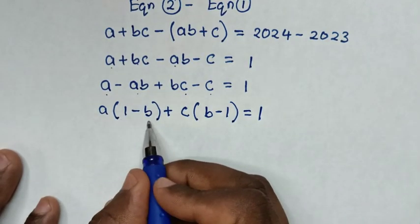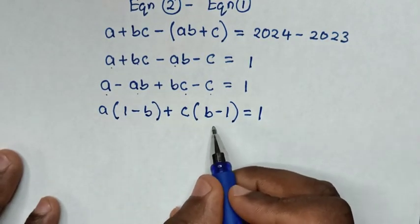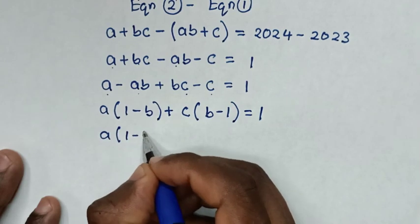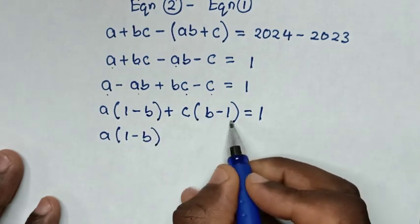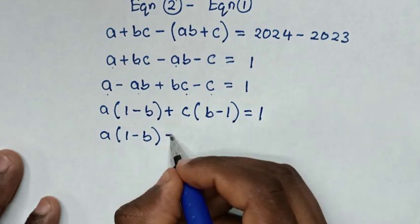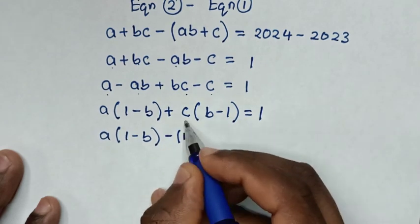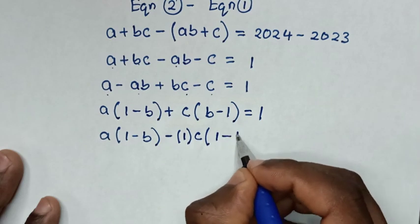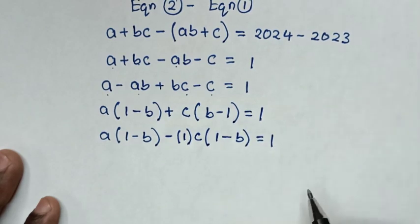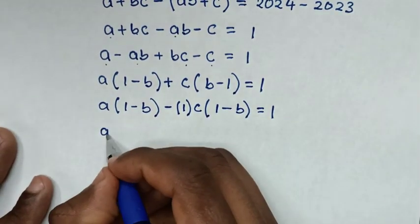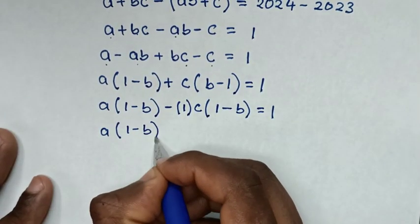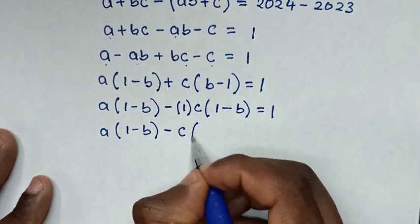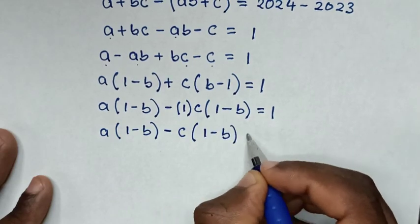In the bracket we have 1 minus B, and here we have B minus 1. To convert B minus 1 to 1 minus B, we factor out negative 1, giving us A(1 minus B) minus C(1 minus B) is equal to 1.